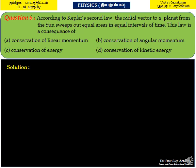First, we will read the question clearly. Question number 6: According to Kepler's second law, the radial vector to a planet from the sun sweeps out equal areas in equal interval of time. This law is a consequence of: option A, conservation of linear momentum; option B, conservation of angular momentum; option C, conservation of energy; option D, conservation of kinetic energy.